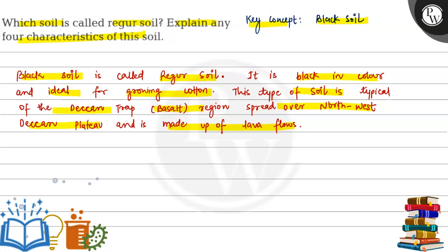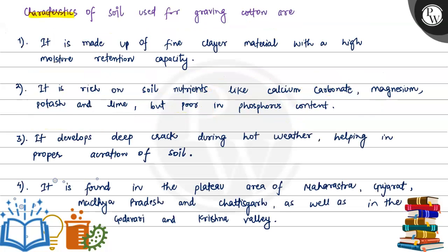Black soil is called regar soil. It is black in color, ideal for growing cotton. Black soil is usually Deccan trap, called basalt region, found in the northwest Deccan plateau formed of lava flows. Let's see the characteristics of soil used for growing cotton.